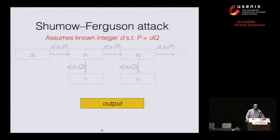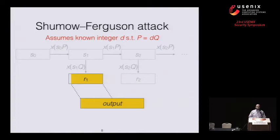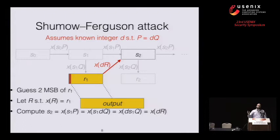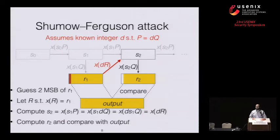What Schumann and Ferguson noticed was that if an attacker knows an integer d such that P is the scalar multiple of d and Q, then from knowing just the output, you can recover the internal state. You start by treating the output as the least significant bytes of R1, then guess the two most significant bytes of R1 and multiply by d to recover state S2. From S2 you can compute R2 and compare its least significant bytes to the output. If they don't match, your guessed two bytes were incorrect, so you try a new two-byte value. If they match, the attacker has successfully recovered S2 and from that point on can know all future outputs of the generator.